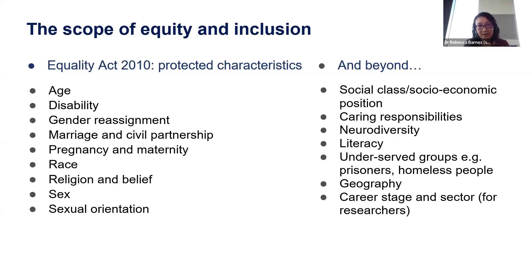We're also very interested in geography — both where research is carried out, since research often focuses on major urban centers rather than rural, coastal, or suburban areas, and how funding is distributed, which is often not equitable. We're also mindful of career stage and sector for researchers, recognizing that early career and precariously employed researchers, and those outside academia in clinical specialisms, public health, or social care, face particular challenges. Crucially, intersectionality means that different identities and characteristics intersecting can lead to an exacerbation of inequalities and exclusion.